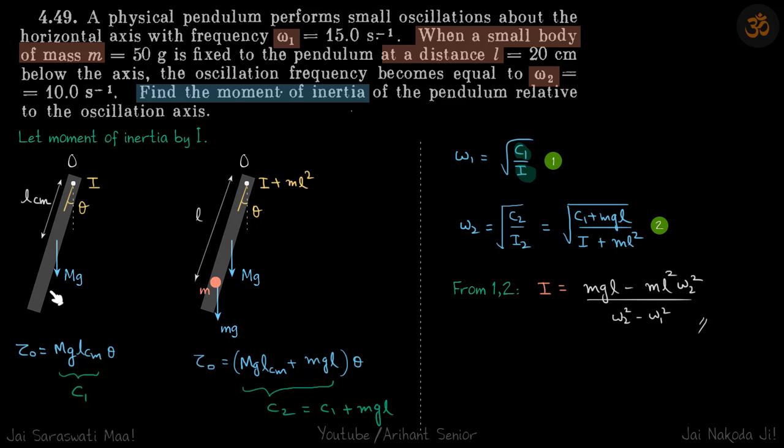Let's say the center of mass of this physical pendulum is at a distance LCM. Now what's given is when a small body is attached at a distance L below the axis, the oscillation frequency becomes omega 2.